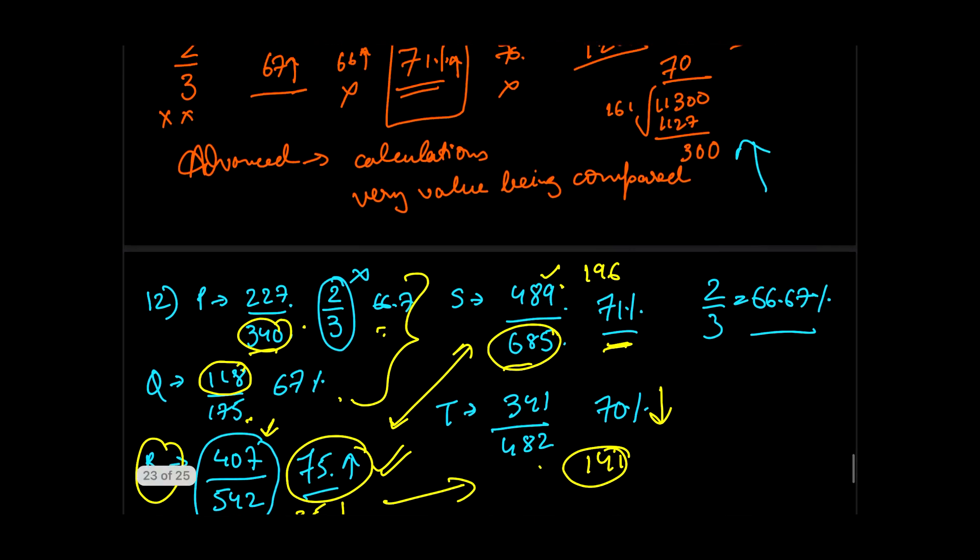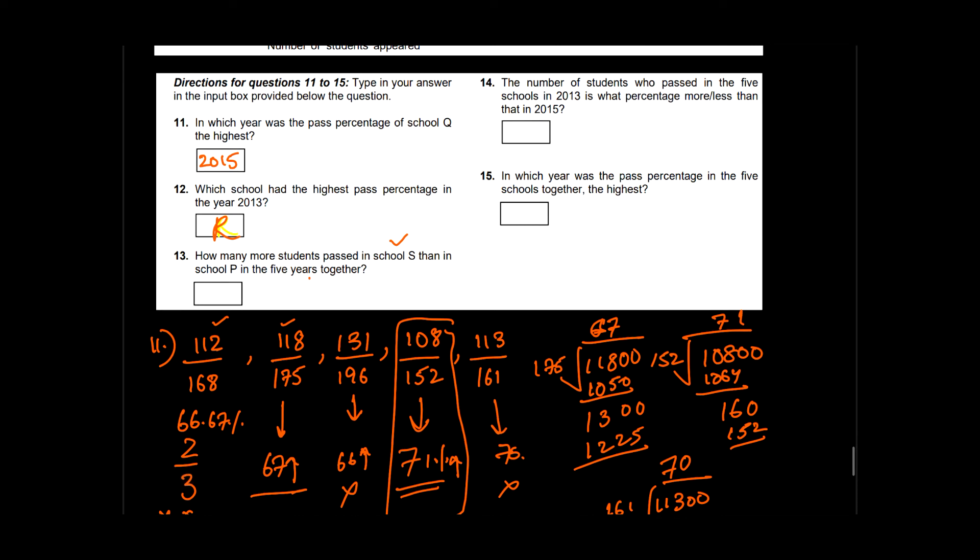They are asking you for the absolute difference—no percentage, nothing. So absolute difference will be 2573 minus 955, which equals 1618. So my answer comes out to be 1618. I'll go back and mention this in the box: 1618. We have to enter these numbers using the on-screen keyboard.